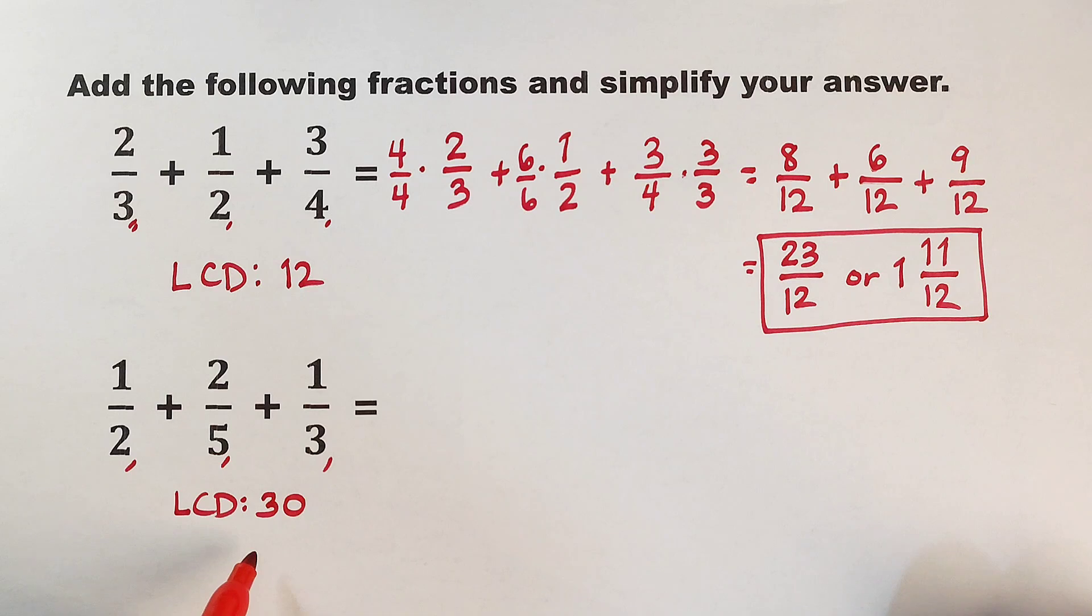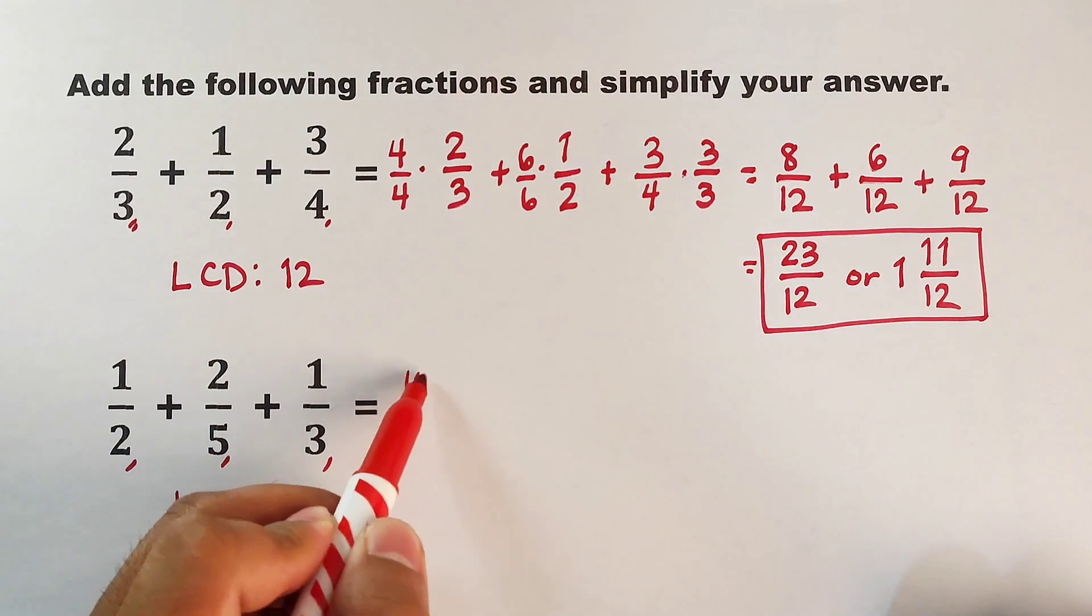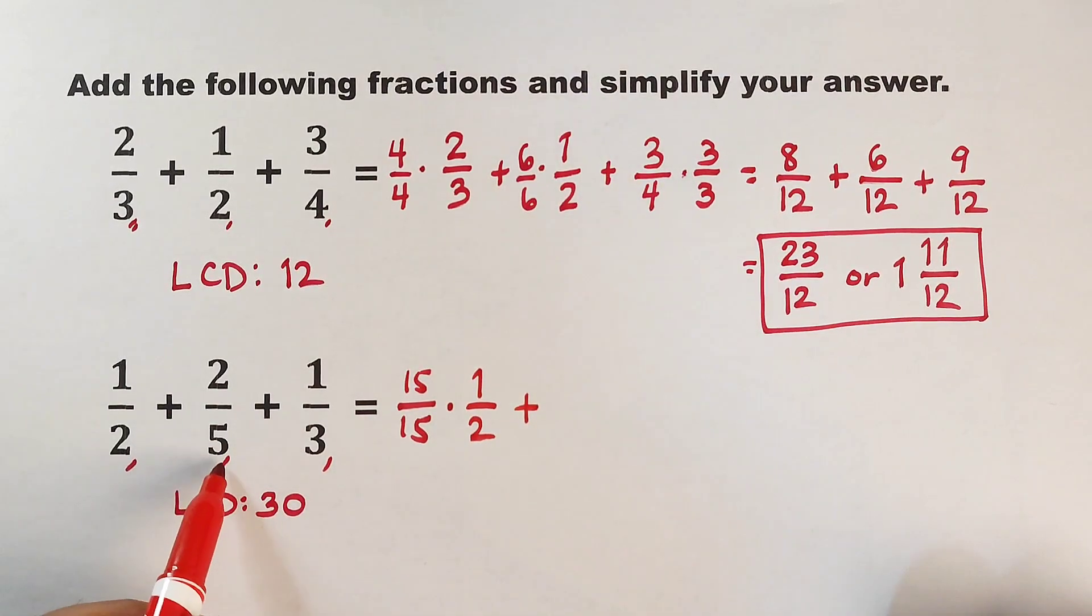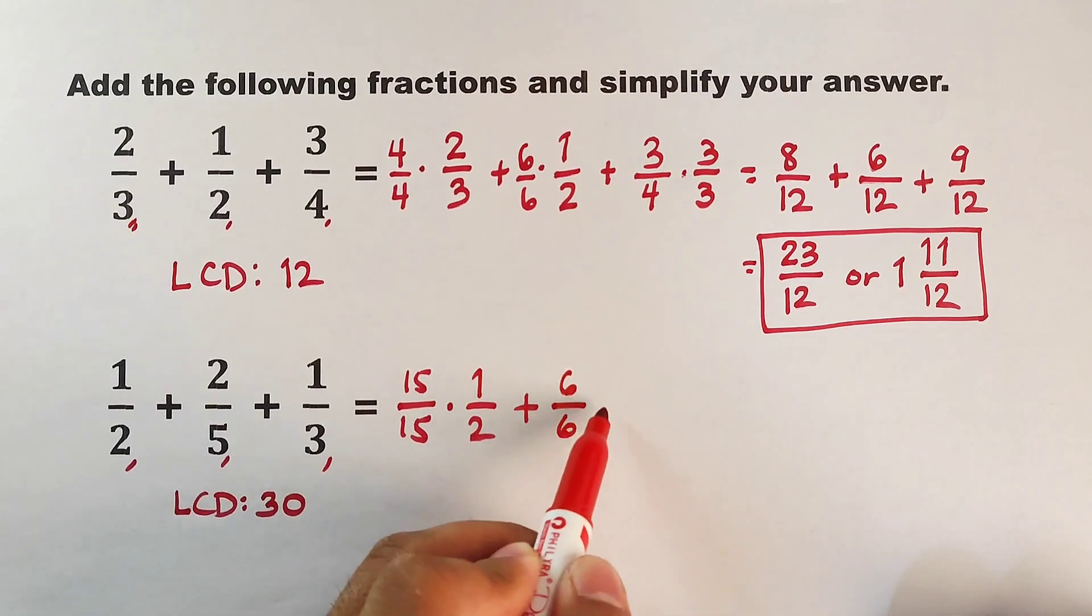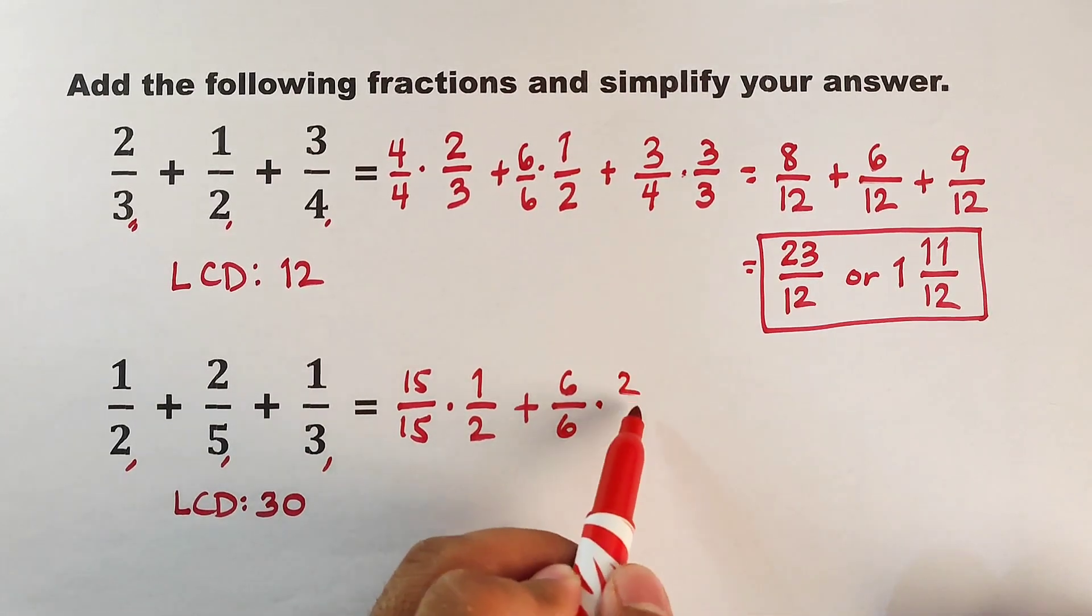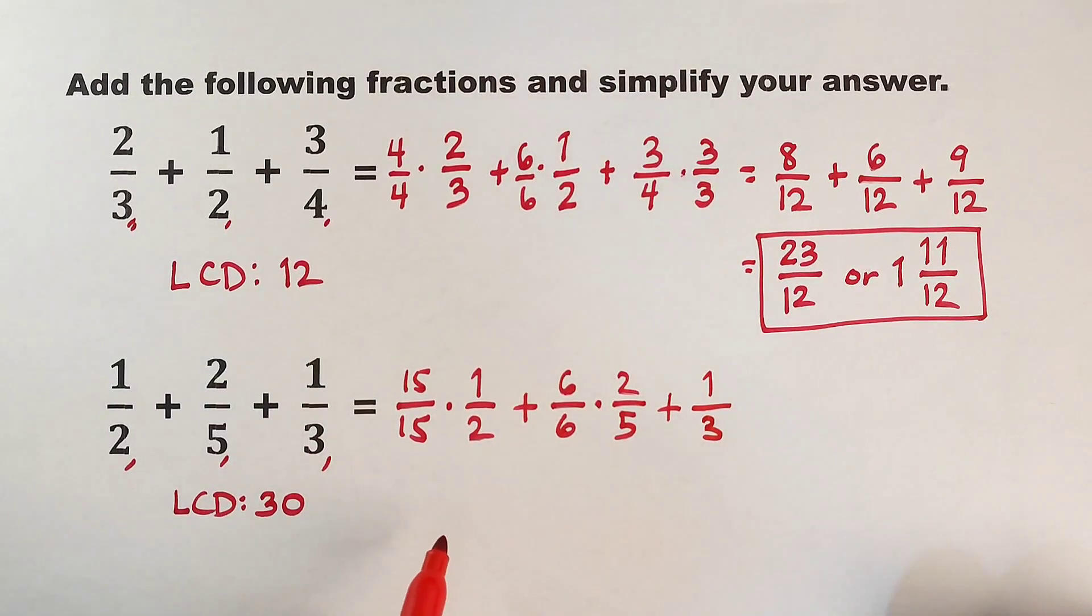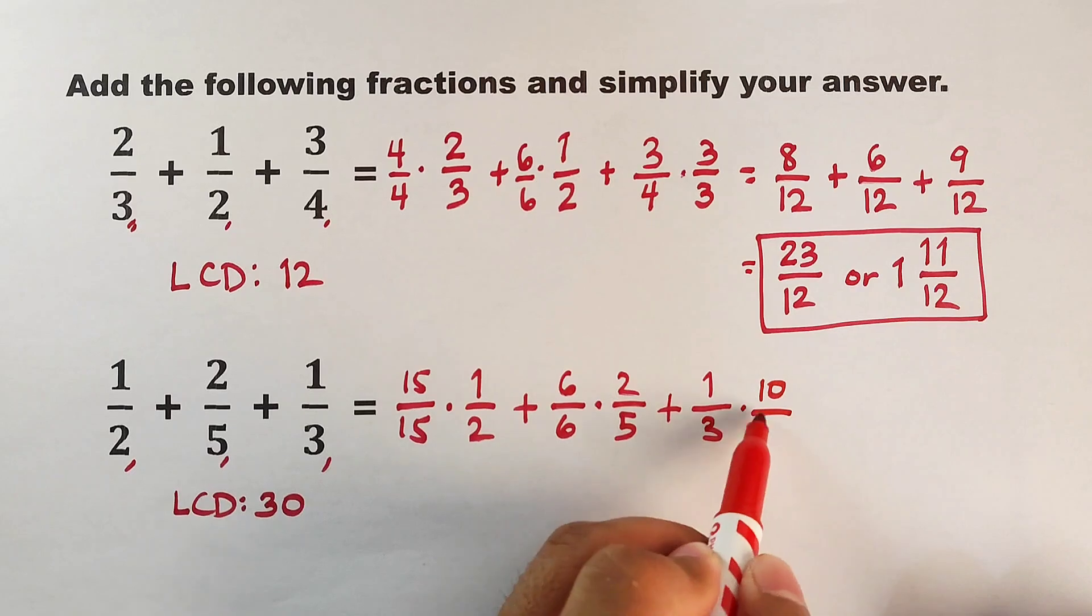So what are we going to do with 30? We will think of a number that will multiply 2 to make it 30. That is 15. So this 2 fifths must be multiplied by 6 over 6. Plus this 1 third can be multiplied by 10 over 10.